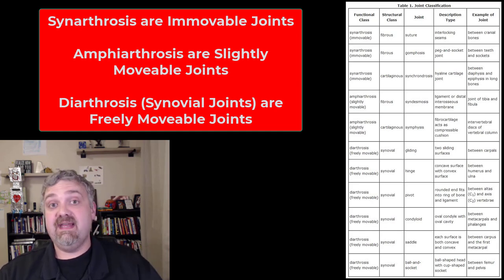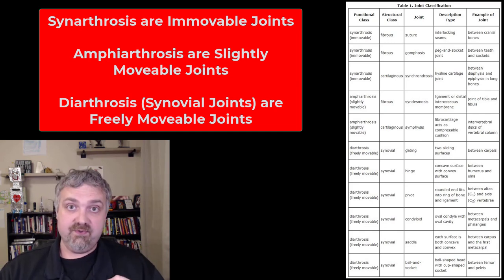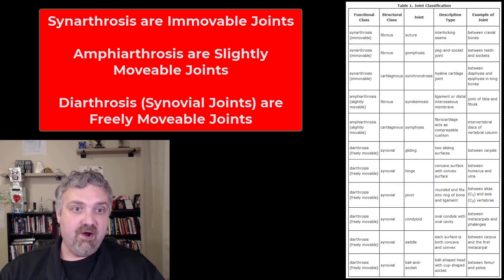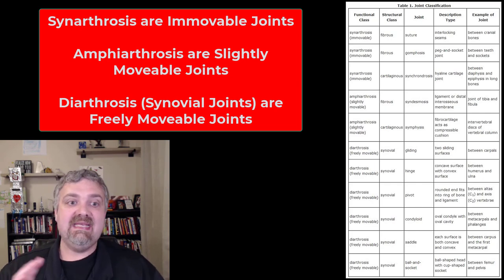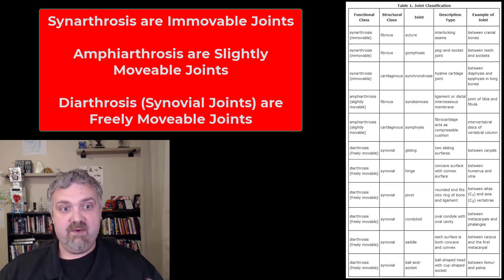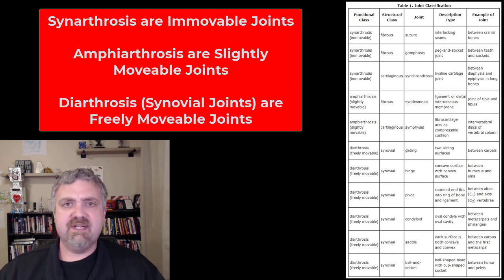Joints can be classified as synarthrosis, which means an immovable joint; amphiarthrosis, which means a slightly movable joint; and a diarthrosis, which is a synovial joint, meaning freely movable.